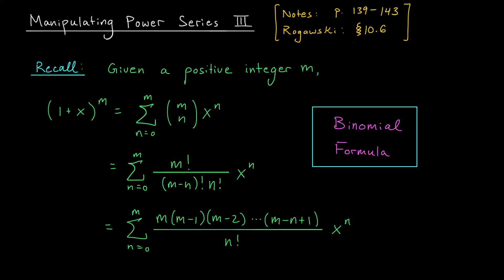Now, there's actually a fifth building block function that I think is worthwhile to keep in mind, but its Maclaurin series is a little bit more complicated, so I've saved it for the end. The Maclaurin series is known as the binomial series, and it's very much related to the binomial formula that you may have learned in high school. As a little review, if you're given a positive integer m, the binomial formula gives you a way to expand the expression 1 plus x to the m. The formula says you can write this as the sum from 0 to m of m choose n times x to the n. What's this m choose n expression?